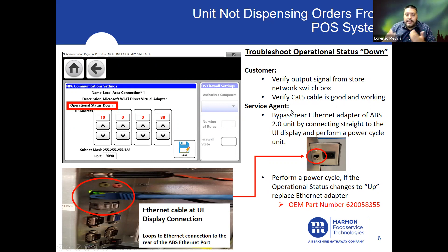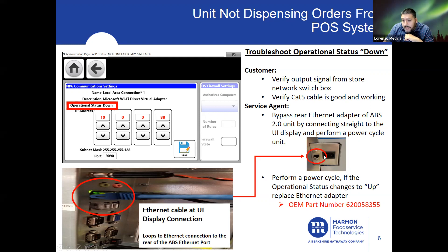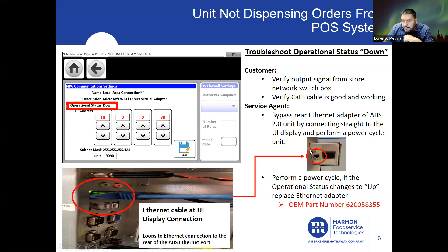As a service agent, what we want to do is bypass the rear Ethernet adapter of the ABS 2.0 unit by connecting straight to the UI display. In the rear of the unit, this is where you connect the Cat5 cable that comes from the store network. Instead of connecting it there, connect it straight to the UI display in the front. By doing this, we are bypassing the rear Ethernet adapter shown in the picture.